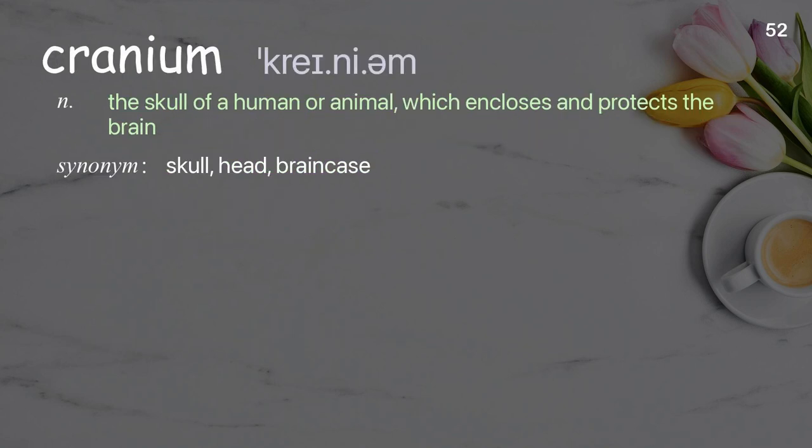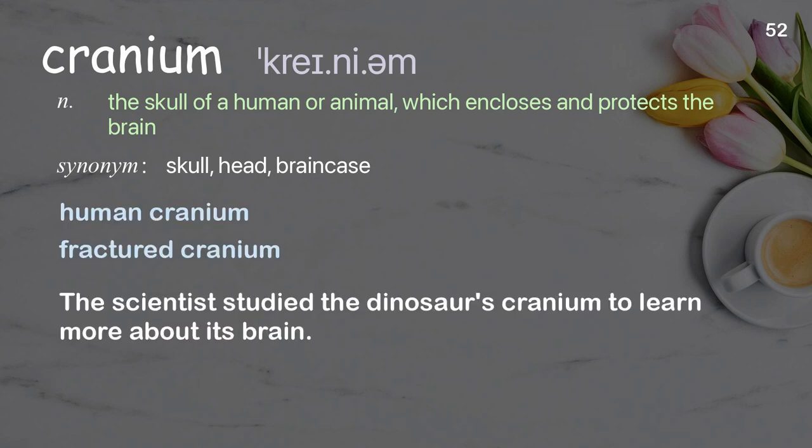Cranium: The skull of a human or animal, which encloses and protects the brain. Examples: Human cranium. Fractured cranium. The scientist studied the dinosaur's cranium to learn more about its brain.